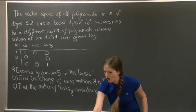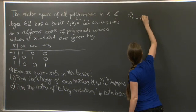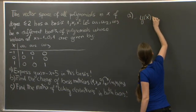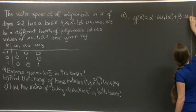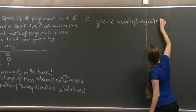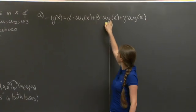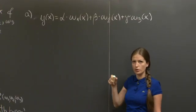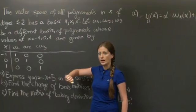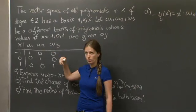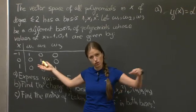Hi. Welcome back. So to start with problem A, we need to find coefficients alpha, beta, and gamma so that y of x is expressed within this coefficient in this new basis w1, w2, and w3. Now, one way to do that would be to look at this table of values, explicitly find w1, w2, and w3.